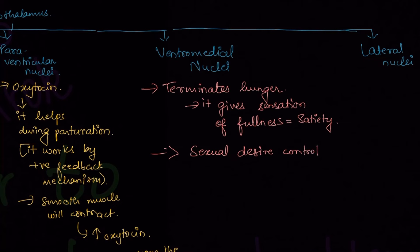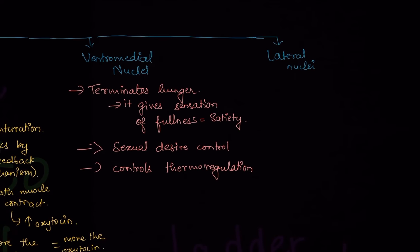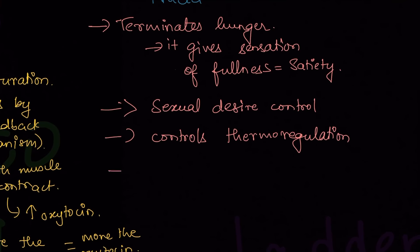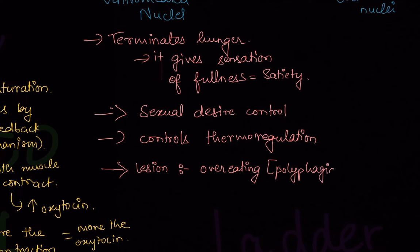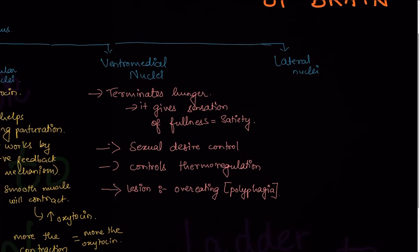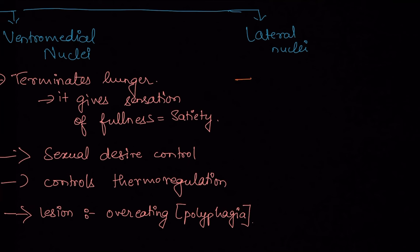If there is a lesion to the ventromedial nucleus of the hypothalamus, hunger will not be terminated, causing overeating. This overeating, in Latin, is called polyphagia.